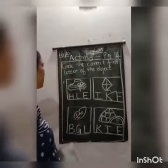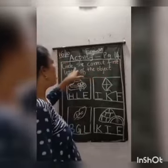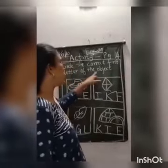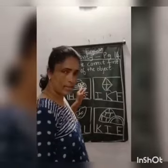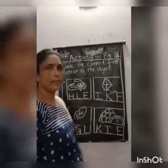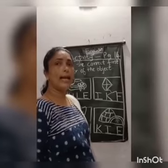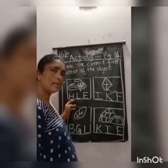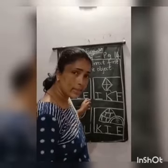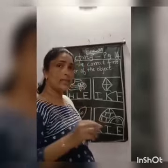Now, we will circle the correct alphabet and also color it. First picture is hat. The alphabets given are H, L and E. Is H for hat? Is L for hat? No. Is E for hat? No. So H for hat — we will circle the correct alphabet H.